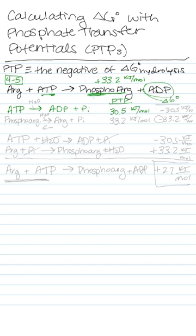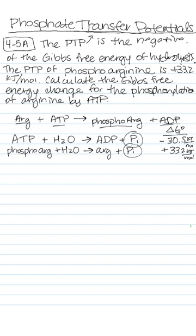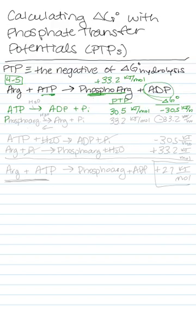And therefore it has delta G of hydrolysis of minus 30.5 kilojoules per mole. Now I also have the reaction for phospho-arginine. So hydrolysis of phospho-arginine means that we take phospho-arginine and make arginine plus phosphate, plus some water molecule. This one has a value of plus 33.2 kilojoules per mole, making delta G of hydrolysis minus 33.2 kilojoules per mole.